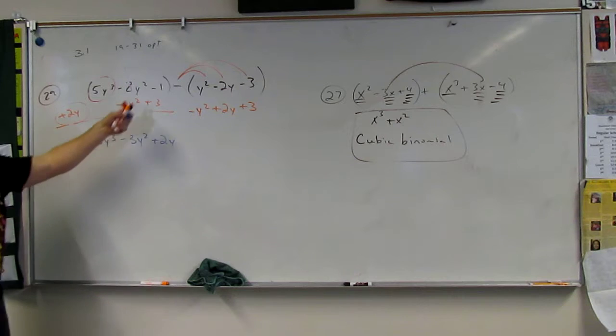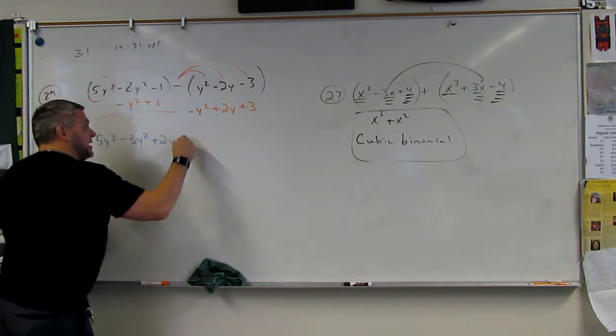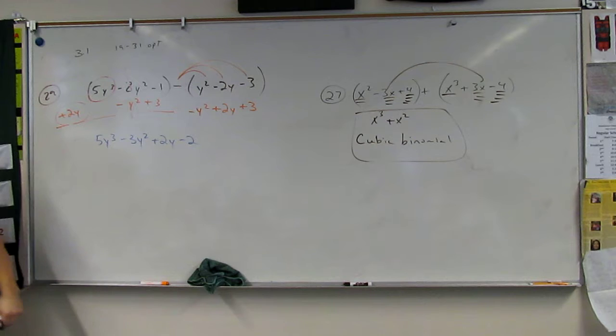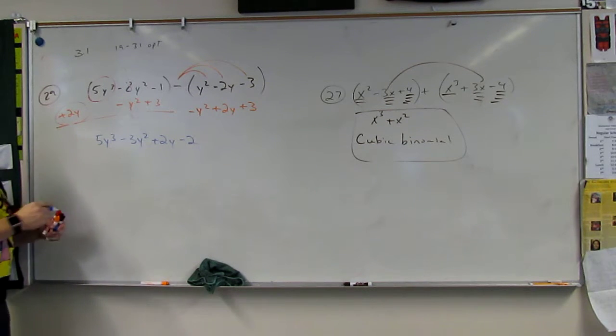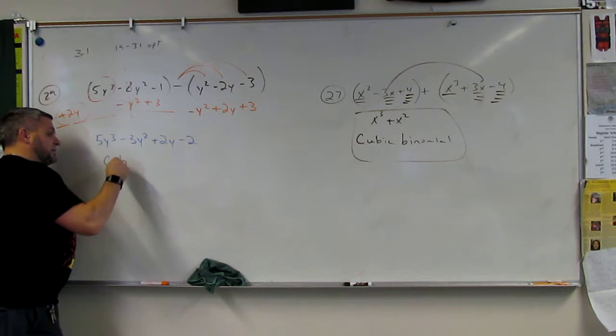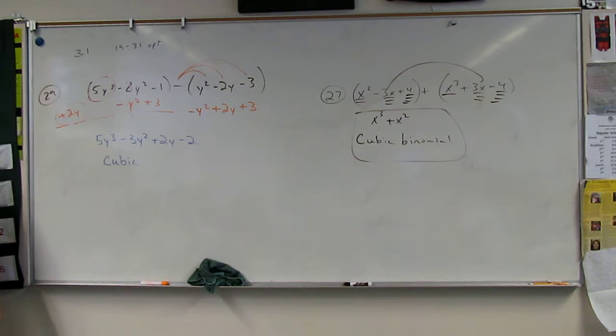And then what is negative 1 plus 3? Negative 2. This is still a cubic. Everyone see that? It's still a cubic, but now it's not a trinomial. What do we call it? Polynomial.